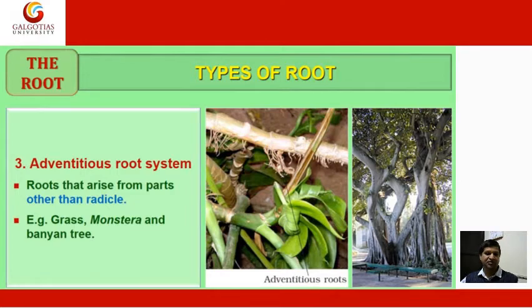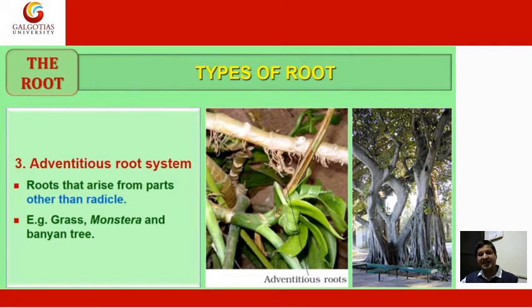Adventitious root system: roots that arise from parts other than the radicle. Examples include grasses, monastery plants, and the banyan tree.